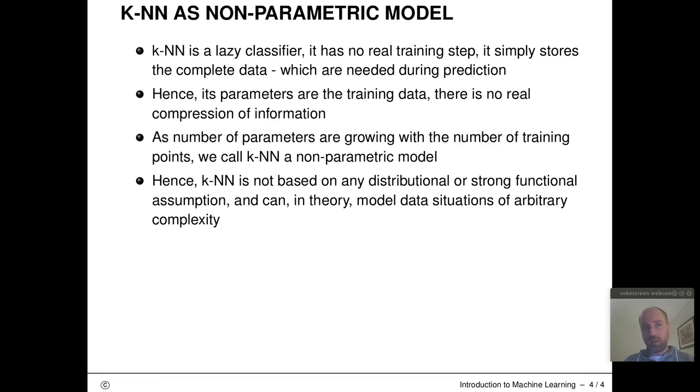The dimensionality of my linear model and the number of estimated parameters always stays the same. And this is why I call a linear model a parametric model and why I call a KNN model a non-parametric model.